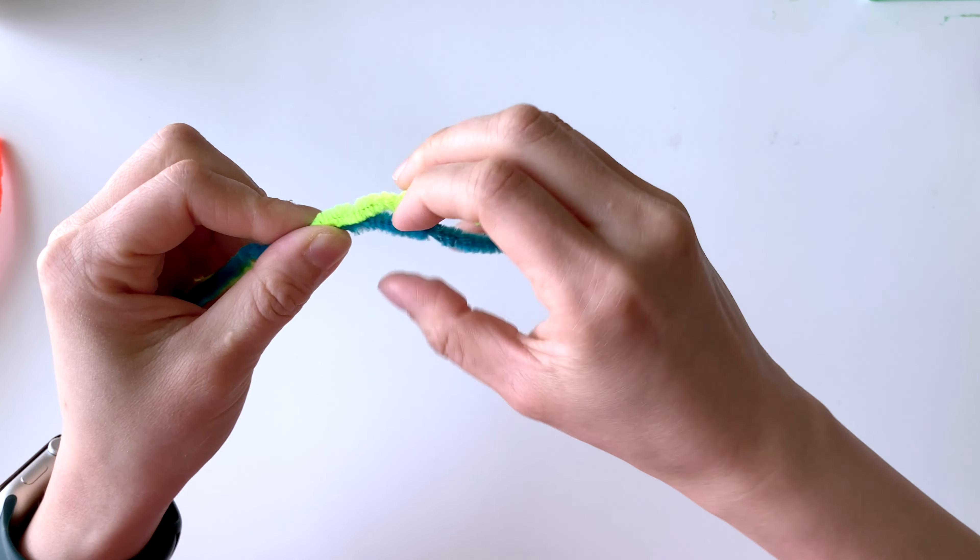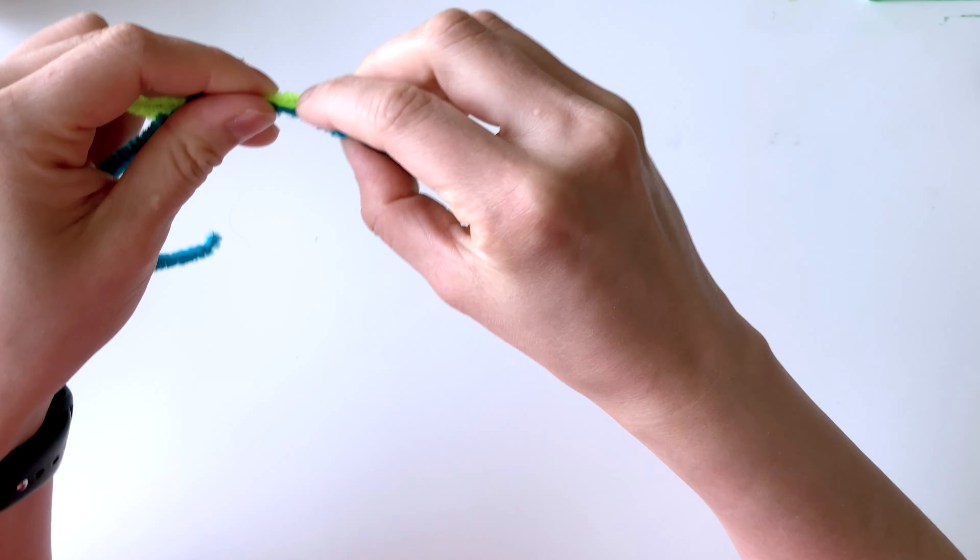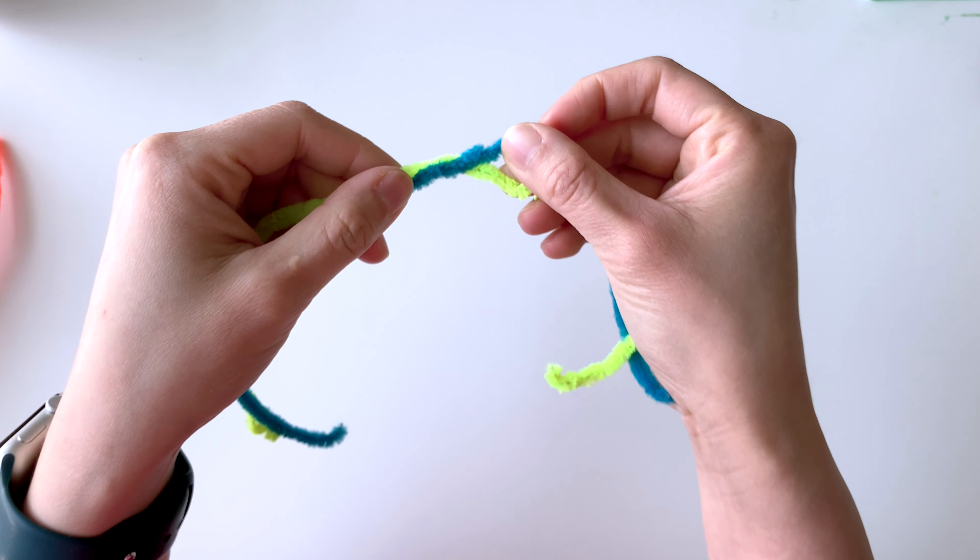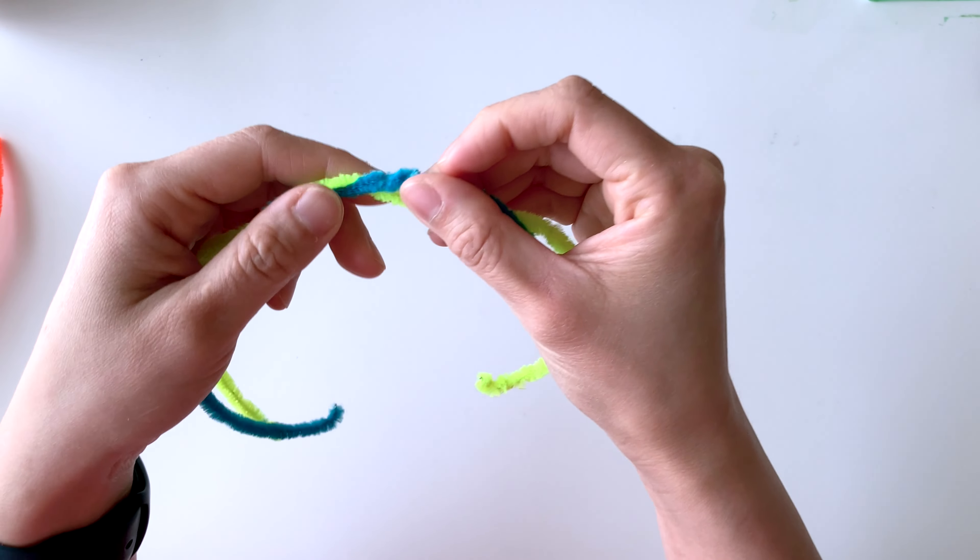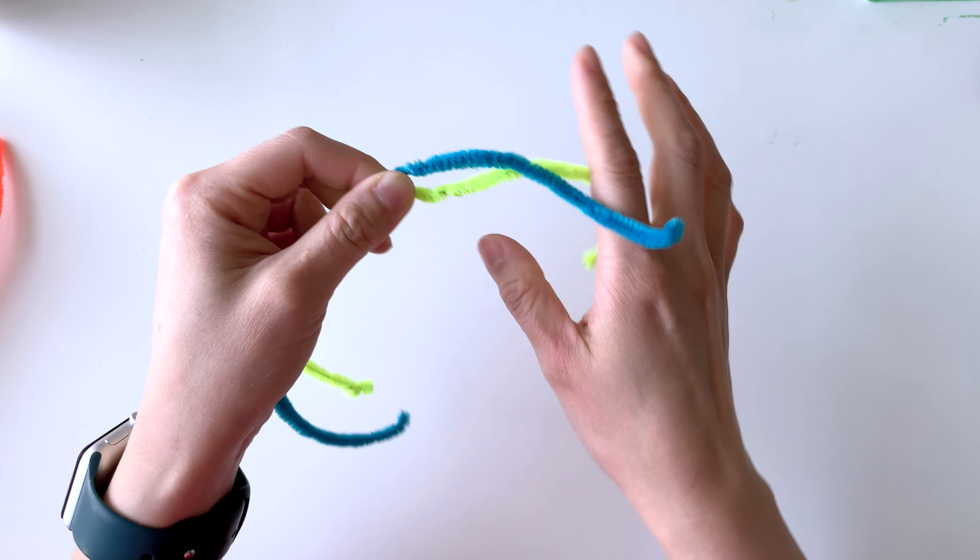So I'm going to find the middle portion of the pipe cleaner. I'm going to twist these two colors around, as you can see here, that's the middle section right there. And then I'm just going to twist them, intertwine them with each other.